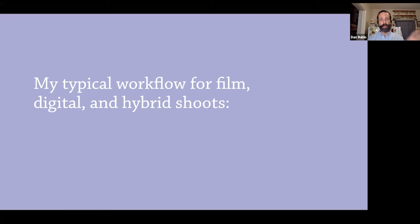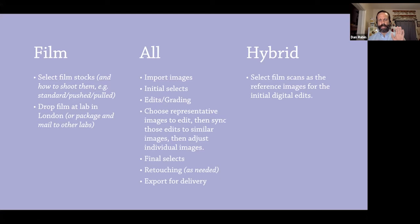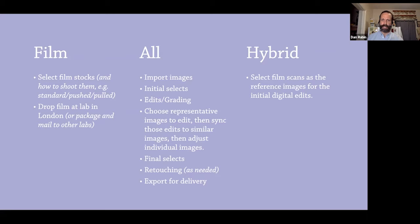My workflow looks like this — a mixture of film, digital, and hybrid for my shoots. When I shoot film, I select film stocks, make all those decisions, drop the film at the lab. On the hybrid side, I'll usually select film scans as reference for the digital edits. No matter what I'm shooting, the post-shoot workflow is the same: importing images, making selects, grading, choosing images to edit, final selects, retouching — all digital regardless of what I'm shooting. There isn't much difference between any of these mediums as far as the core workflow. It's all still a digital workflow — it's the most efficient way to work.